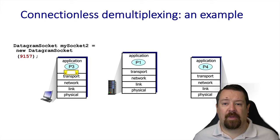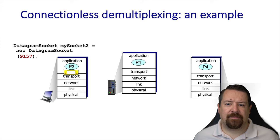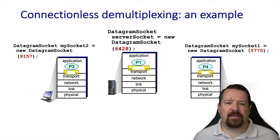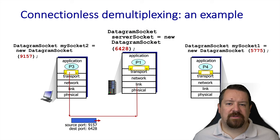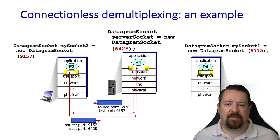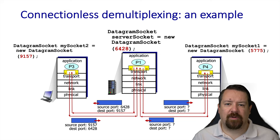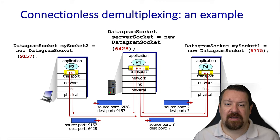Let's follow this through an example. We've created a new UDP socket for process 3; likewise, process 4 also creates a new UDP socket, and the same for process 1. When process 3 wants to talk to process 1, it uses its own port number in the source port field and the process 1 port number in the destination port field. When process 1 replies back, those positions are reversed. Now process 4 wants to communicate with process 1, using 5775 in the source port and 6428 in the destination port field. Process 1 must keep track of the remote port numbers for each message it receives so it can reply to the correct client, since it uses the same socket to communicate with both clients.